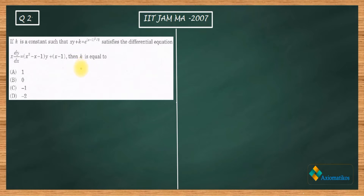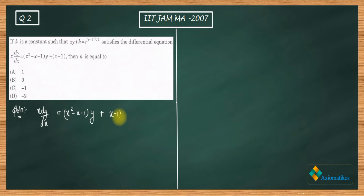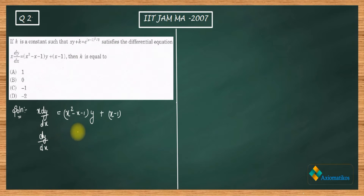First, I will modify this differential equation to get a familiar form. What we have is: x dy/dx equals (x² − x − 1)y + (x − 1). If we divide both sides by x, assuming x is non-zero, and take the y-term to the left side, we get a standard form.